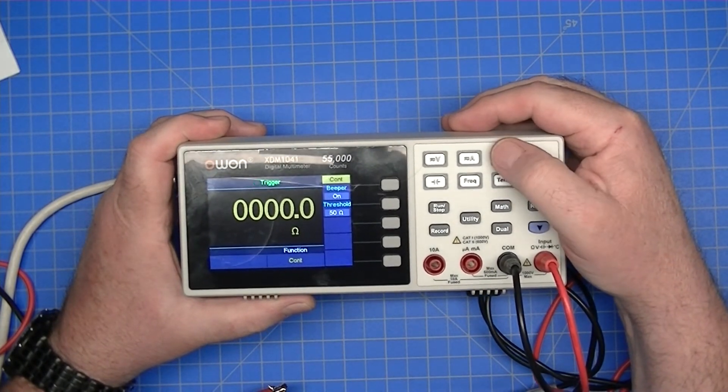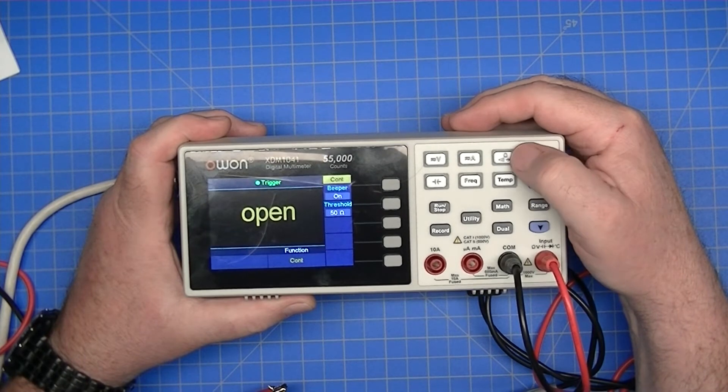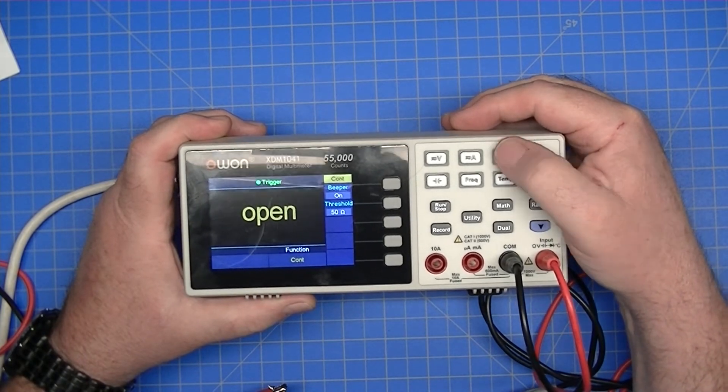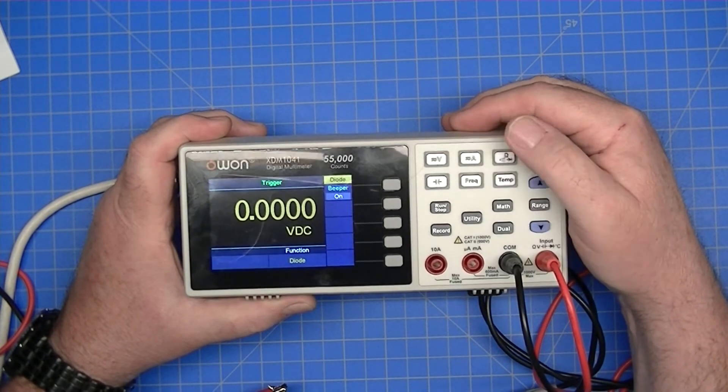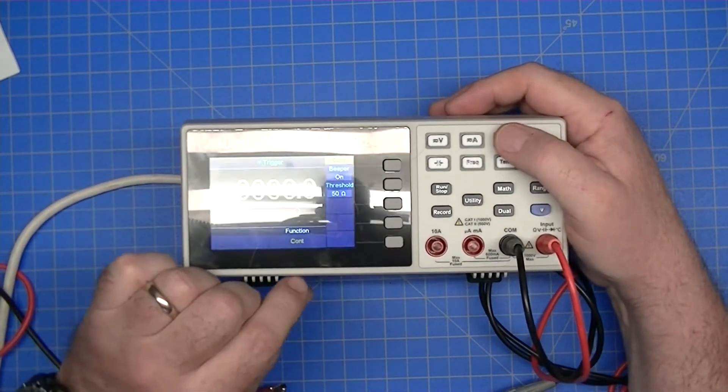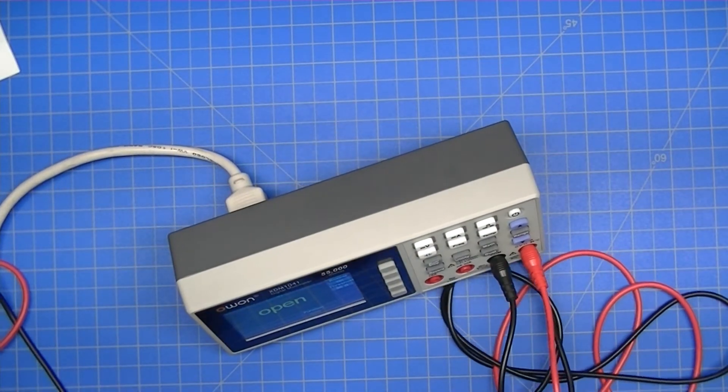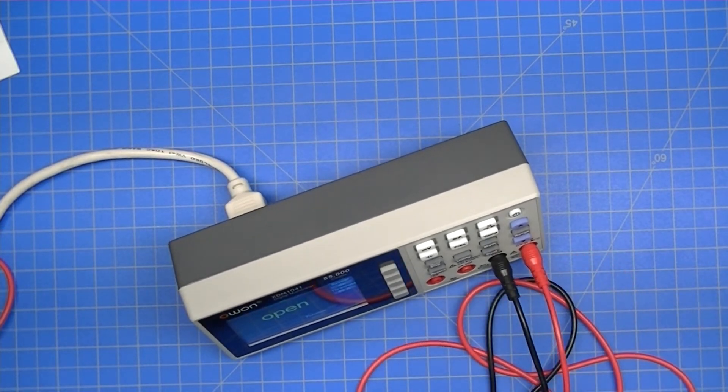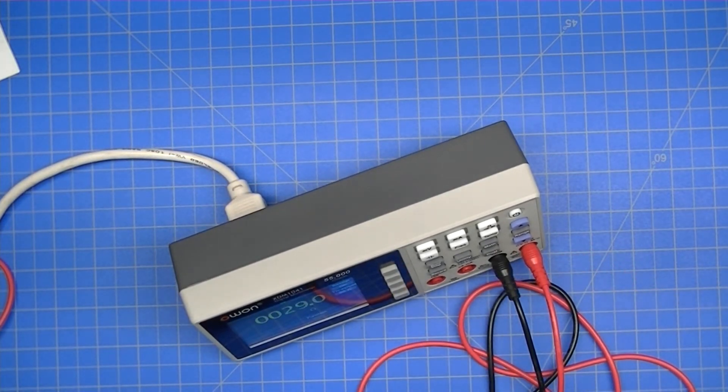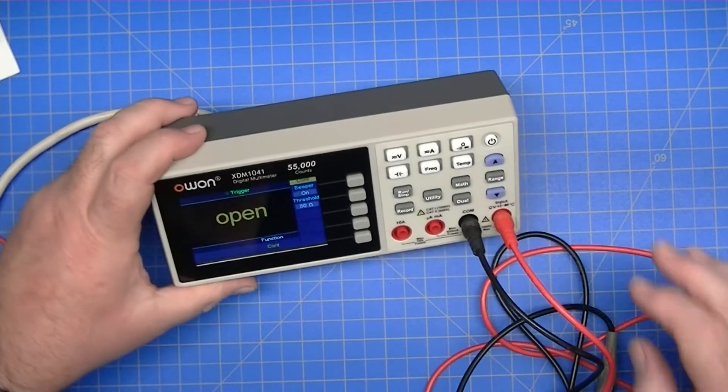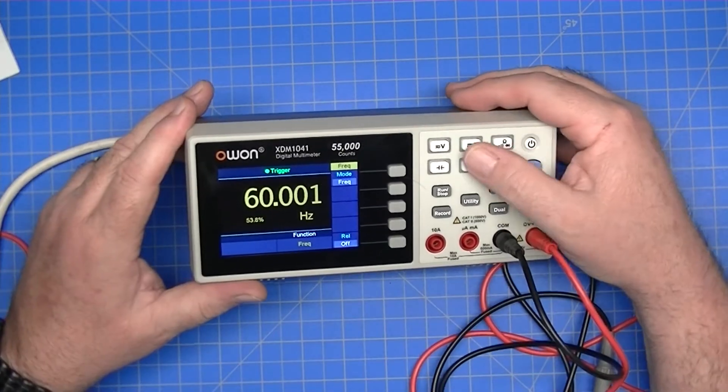And then here, resistance, and then our diode and our continuity functions. And it says down there on the bottom, continuity. So let's disconnect that from the multimeter. And I know you can hear that. That has to be loud, right?